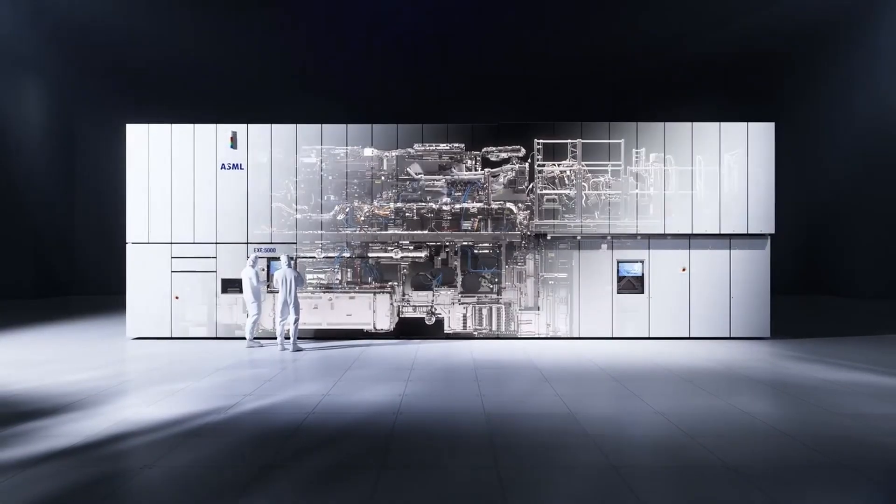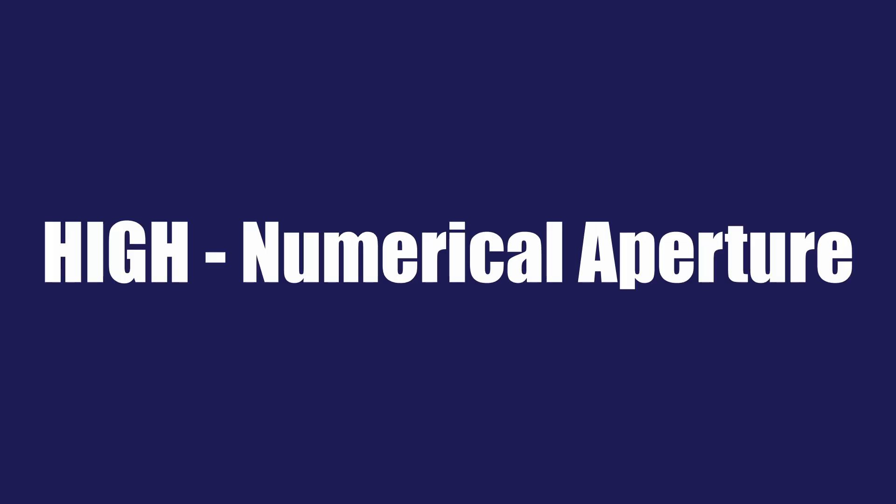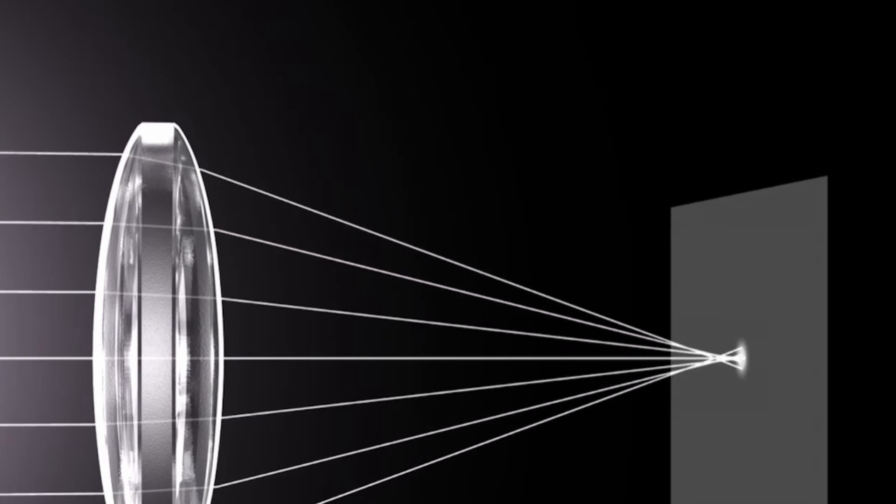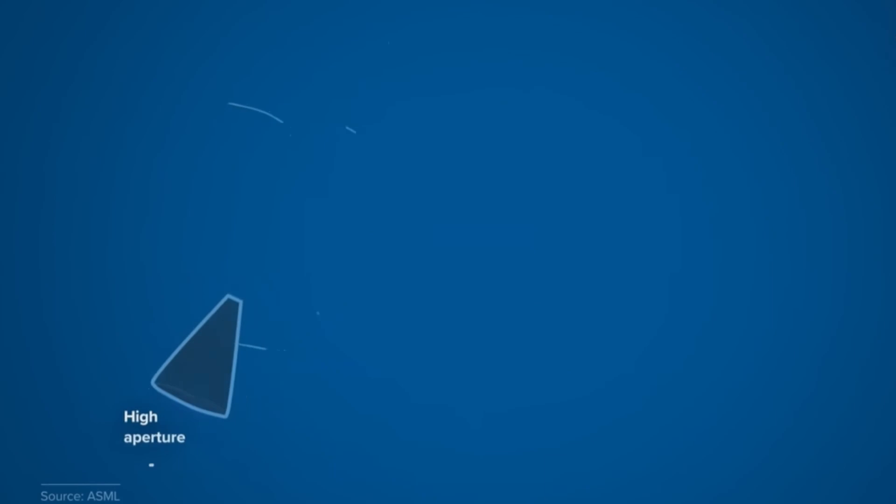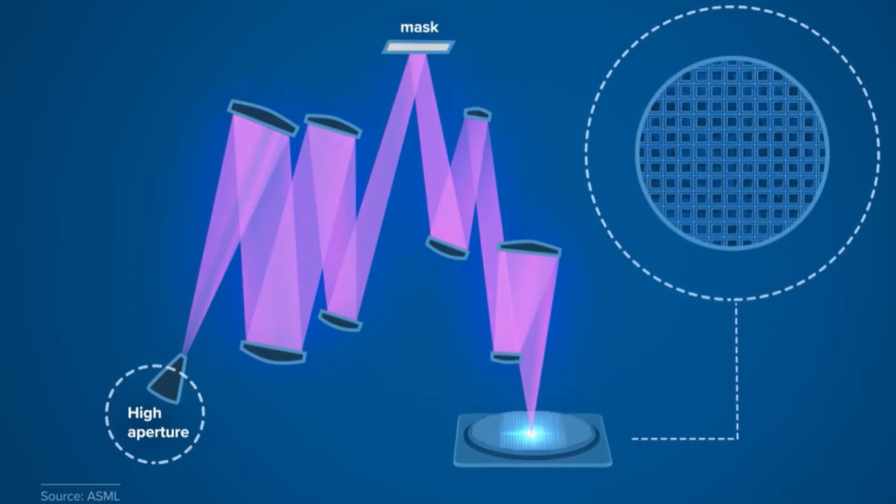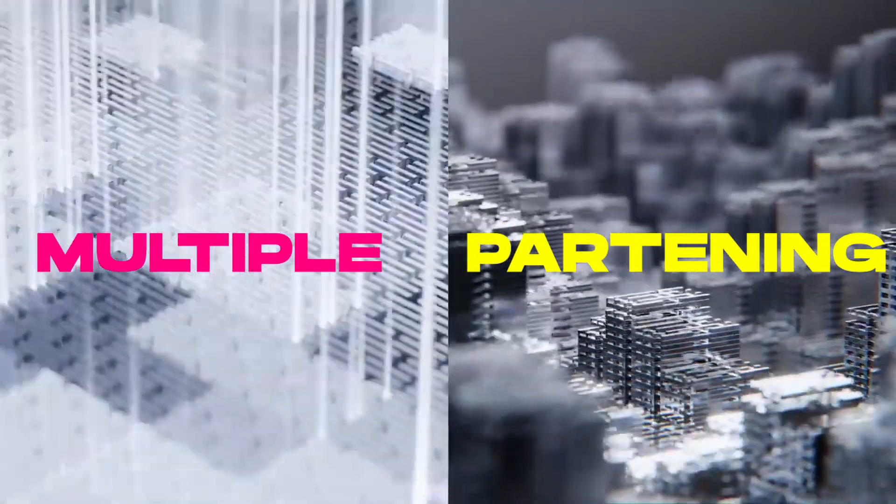It is exactly at this point that high NA EUV comes in. The NA in high NA means numerical aperture. It is like the lens of a camera. The larger the aperture, the more light enters and the more details you can see. In practice, this means that high NA EUV can print even smaller transistors in a single exposure, without needing that complicated process of multiple patterning.